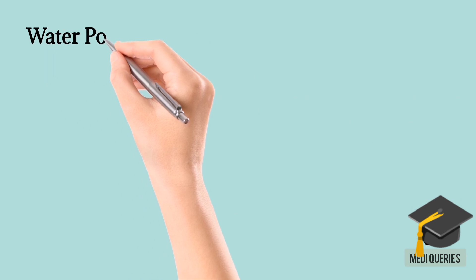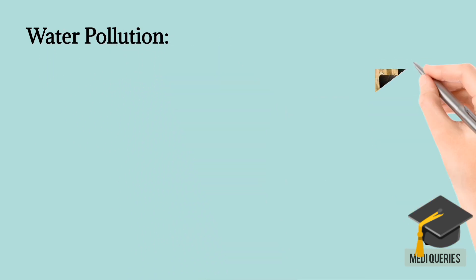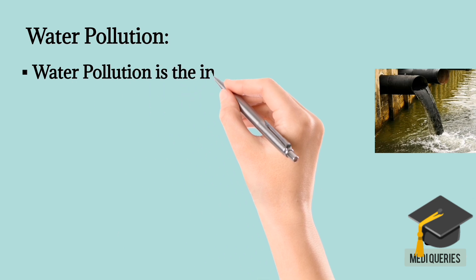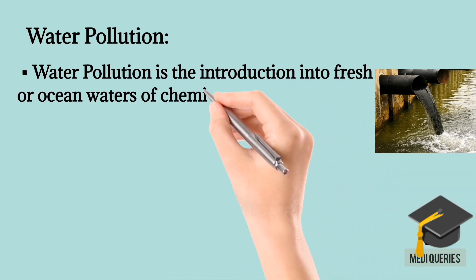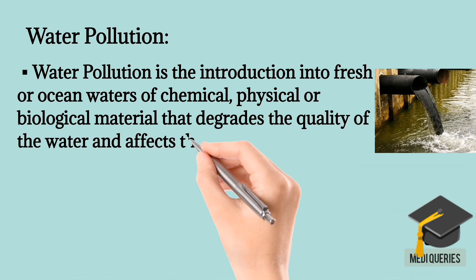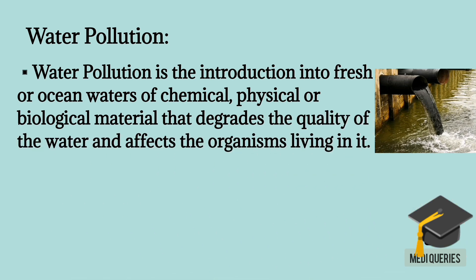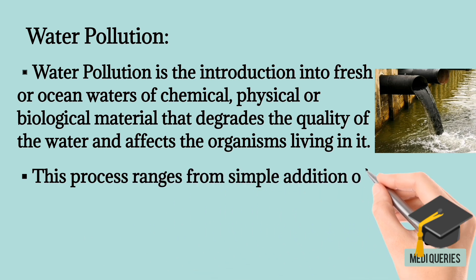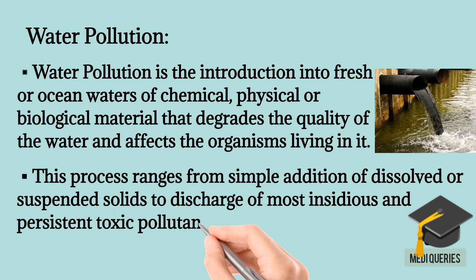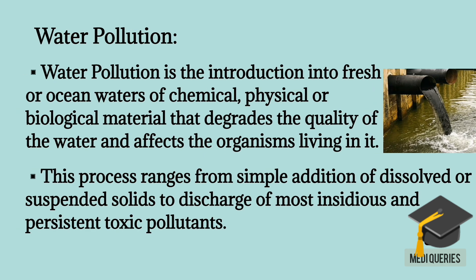The second type of pollution is Water Pollution. Water pollution is the introduction into fresh or ocean waters of chemical, physical, or biological materials that degrade the quality of water and affect the organisms living in it. This process ranges from simple addition of dissolved or suspended solids to discharge of the most insidious and persistent toxic pollutants.